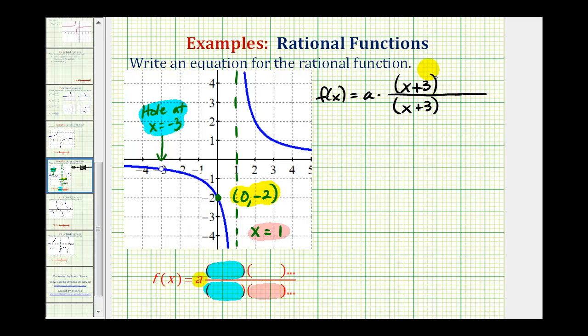Notice x equals negative three makes both the numerator and denominator equal to zero. And we should also recognize that common factors here make holes in the graph.